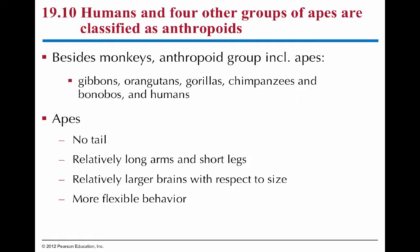Anthropoids also include apes. Apes' derived characters include having no tail at all, and relatively long arms compared to their legs. Even more so than primates in general, they have a larger brain with respect to size and flexible behavior. A lot of ape groups have very complex social groups and interactions.